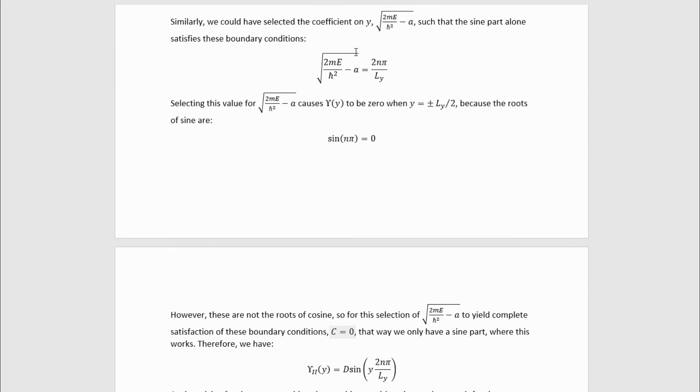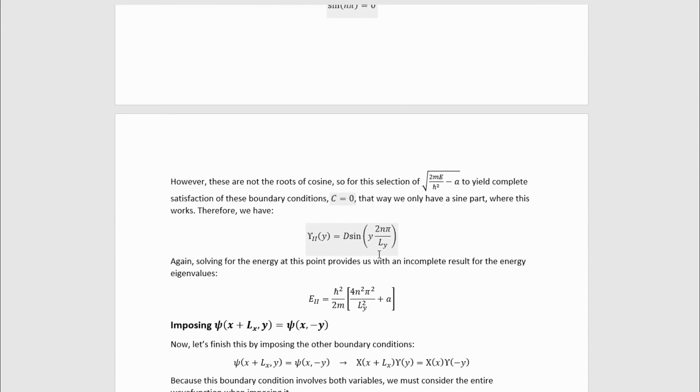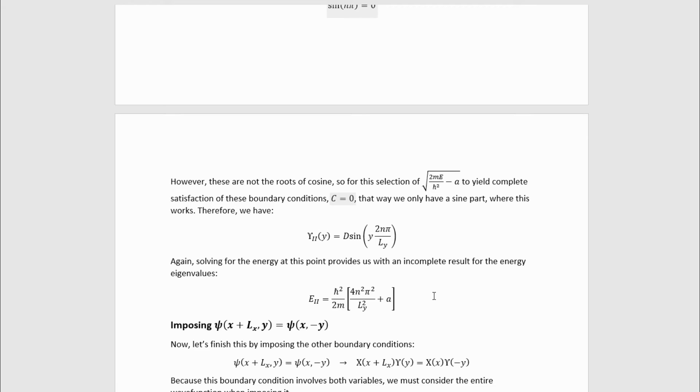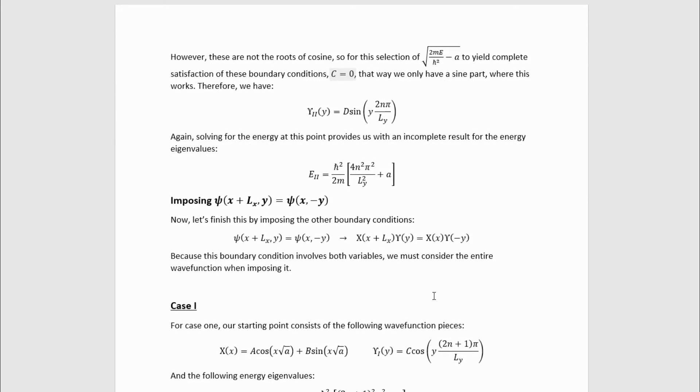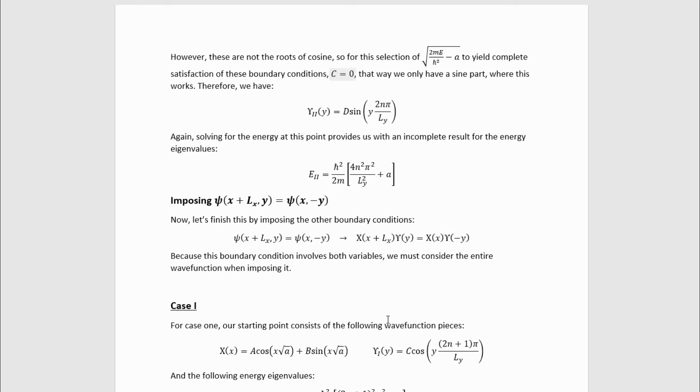Again, we can use this relationship to solve for the energy for case 2, and we get a similarly incomplete result because it doesn't include case 1, and we also don't know what a is. And a will depend on which case we're talking about. To figure out a for the two cases, we need the second boundary condition. To impose a second boundary condition here, because it involves changes in both variables, we need to impose it on the entire wave function at the same time. And therefore, this actually just implies this. We can't just separate off the x part.